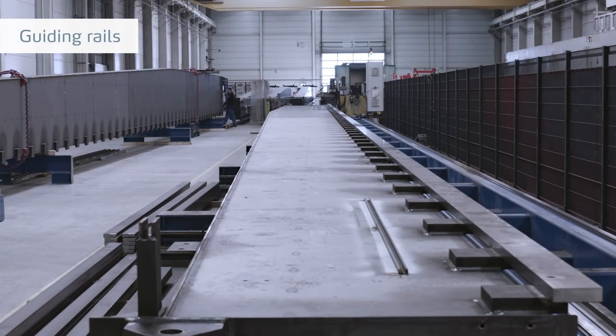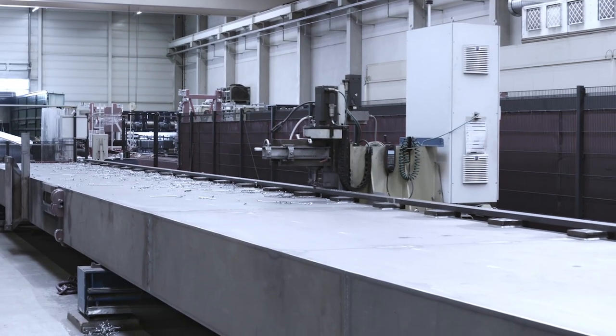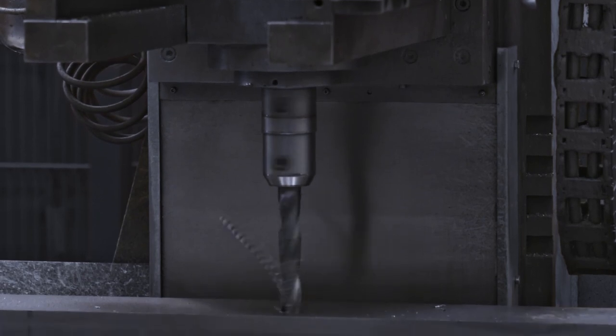The guiding rails on the masts of our stacker cranes are manufactured from wear-resistant steel. For this reason, only limited welding is possible and they are fixed with high-strength screws.